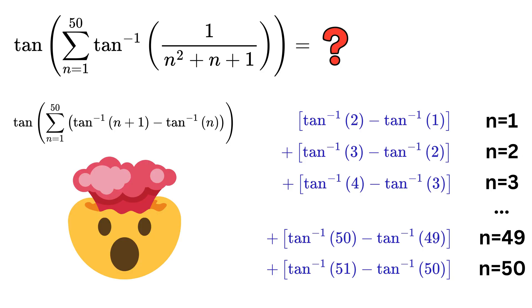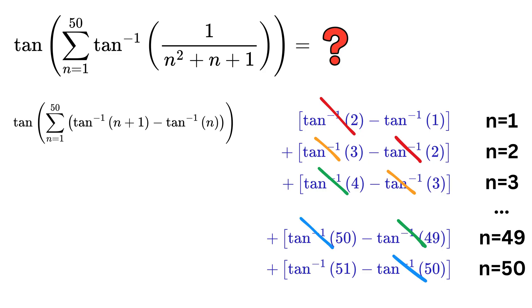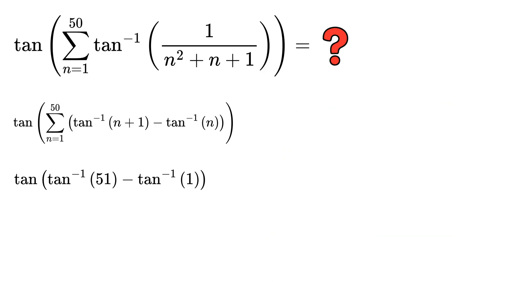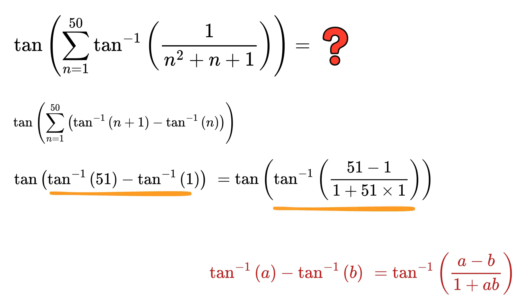So now we can clearly see what is happening. All these terms cancel out, and in the end, the entire long sum reduces to just the tangent inverse of 51 minus the tangent inverse of 1, which makes the final step extremely simple. We will now use the formula for tangent inverse of a minus tangent inverse of b to get this as tangent inverse of 51 minus 1 over 1 plus 51, or tangent inverse of 50 over 52, which simplifies to 25 over 26.